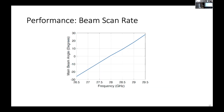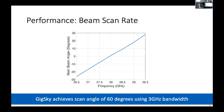First, let's look at the beam steering performance. On the x-axis are the different frequencies supported by our system, and the y-axis shows the beam directions corresponding to those frequencies. As we increase the frequency, the direction of the beam increases linearly. In general, we achieve a scanning angle of approximately negative 30 degrees to positive 30 degrees. In summary, GIGSky achieves a total scanning angle of about 60 degrees using the 3 GHz available bandwidth.